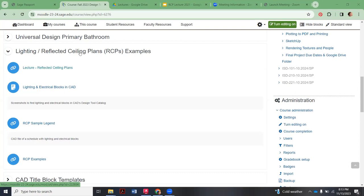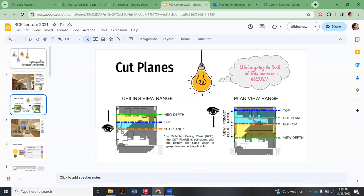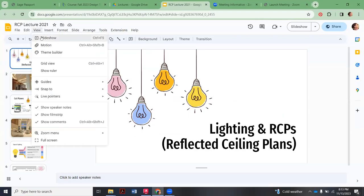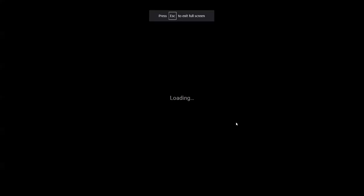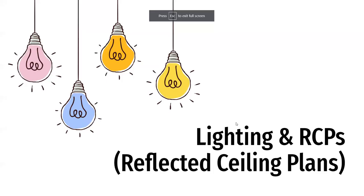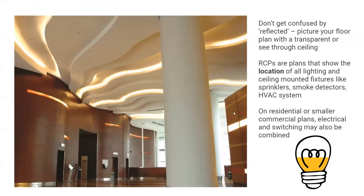If you want to follow along, this is the lecture I'm going to be going over. Let's bring that up as a slideshow. So for our lighting and reflected ceiling plans, the terminology is a little confusing. When they say 'reflected,' the old-school way to describe it would be as if there was a giant mirror on the floor reflecting what you were seeing on the ceiling above.